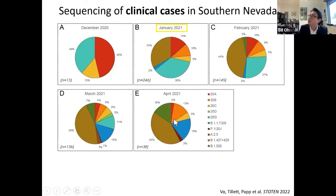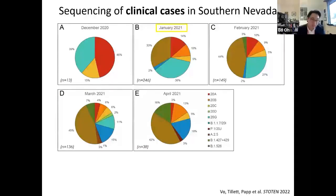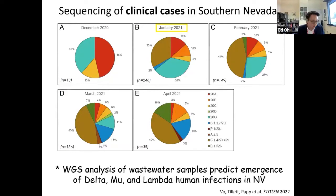We've gone through all samples over 2021 and identified delta, mu, and lambda either earlier or at the same time as when we identified our first human infections in Nevada. Key questions often asked: did we get lucky, or did we accidentally cheat — did we know what to expect in clinical samples? So together with public health collaborators, we examined the emergence and displacement of various Omicron variants in wastewater in Southern Nevada.